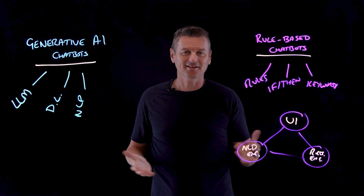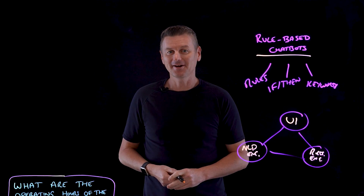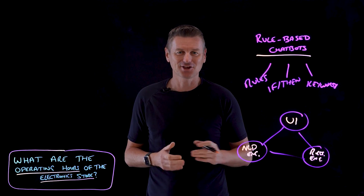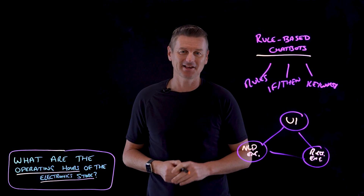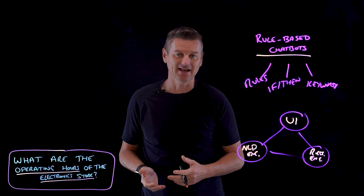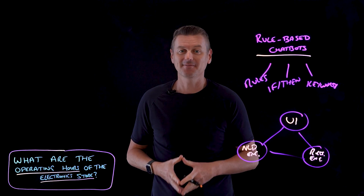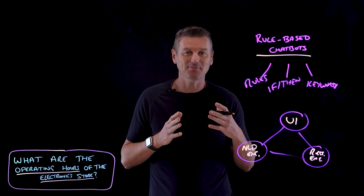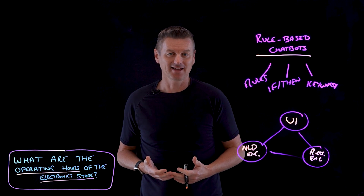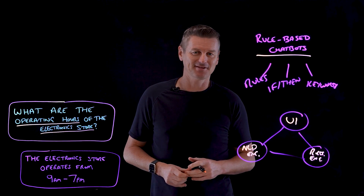Let's ask a rule-based chatbot a question: 'What are the operating hours of the electronics store?' The chatbot would derive a conditional statement that detects entities such as 'operating hours' and 'electronics store.' Based on these predetermined entities and context, the chatbot can determine the user's intent and generate a predefined response like 'The electronics store operates from 9am to 7pm.'